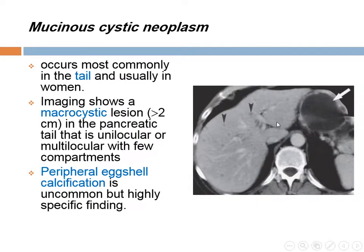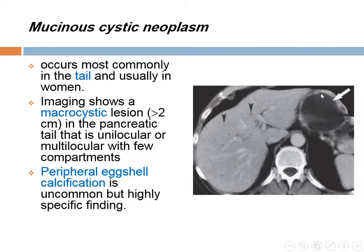Mucinous cystadenomas occur more commonly in the tail and have malignant potential, so they should be resected. Imaging shows macrocystic lesions greater than 2 cm in the pancreatic tail, unilocular or multilocular with few compartments. Peripheral axial calcification is uncommon but a specific finding. Axial calcification in the pancreas equals mucinous cystadenoma, whereas a central scar equals serous cystadenoma.